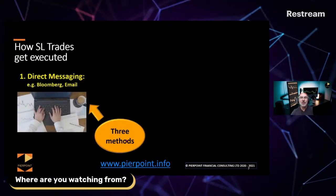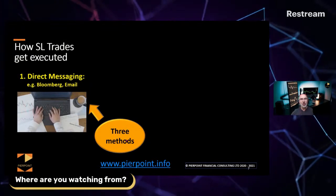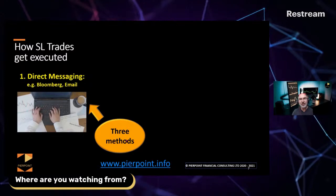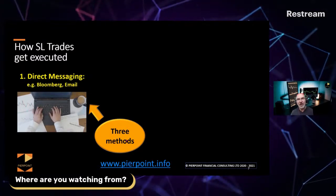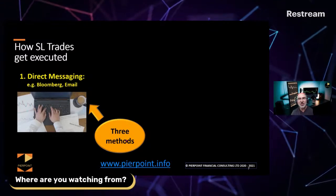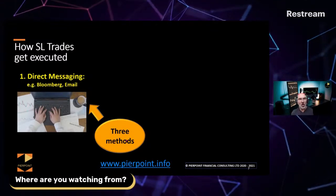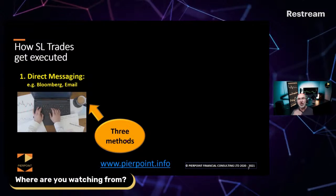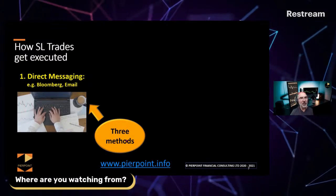So how do securities lending trades work? So far, what we've talked about is only the market trading side of things. This is about securities lending trades. The most straightforward way, as you see, is direct messaging. If I'm a lender and you're a borrower — or I'm a borrower, you're a lender — then what I'll do is I'll send you a message: 'I want to borrow ABC stock. Do you have it?' And you'll say yes or no, and we might send a few messages back and forth.